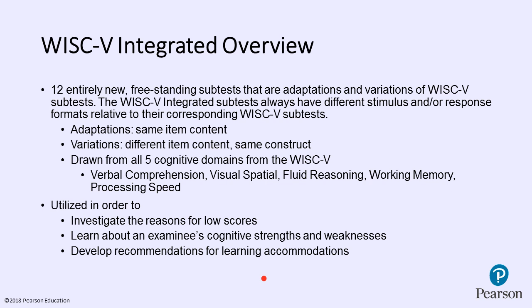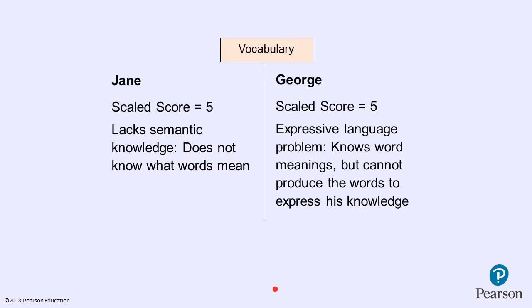The WISC-V Integrated has 12 freestanding, entirely new subtests. Each subtest has a different stimulus or response format. Some are adaptations of the same item content, and some are variations that measure the same construct but with different content. These are drawn from all five cognitive domains measured on the WISC-V. The WISC-V Integrated is used to take a deeper dive and explore reasons for low scores, learn about strengths and weaknesses in a child's problem-solving processes, and to inform recommendations for learning modifications and accommodations.